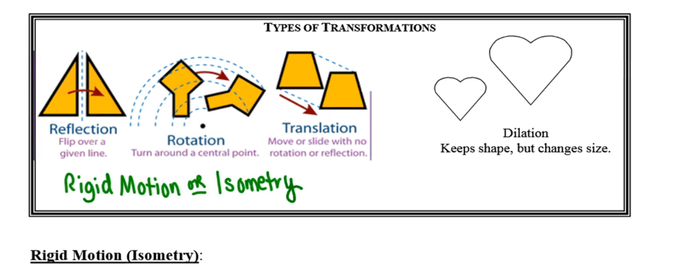So again, if the image is the same size as the pre-image, we have what's called a rigid motion. The dilation, which you probably remember from middle school, keeps the same shape but because it changes size, it is not a rigid motion, not an isometry.